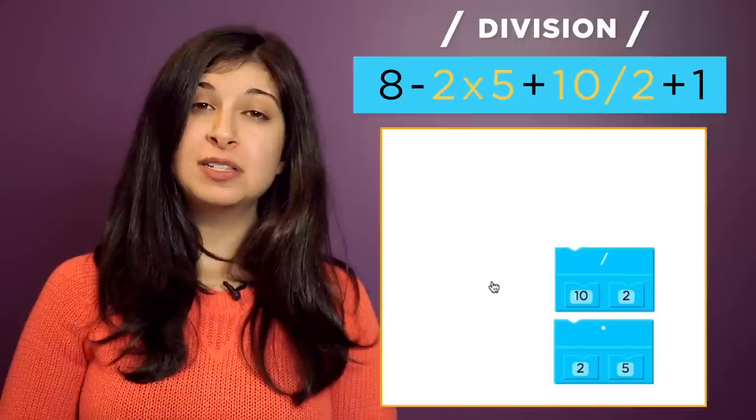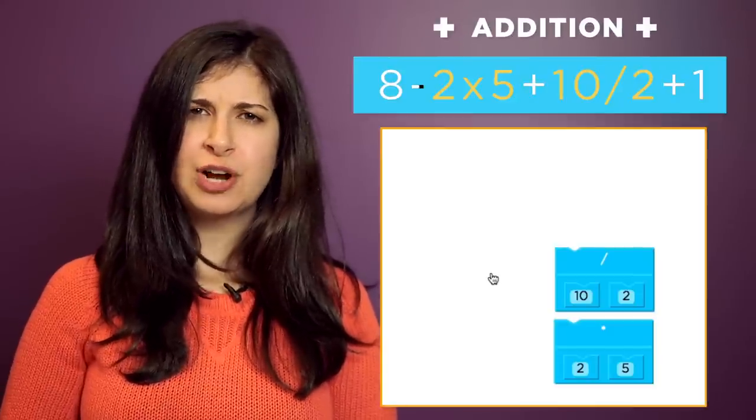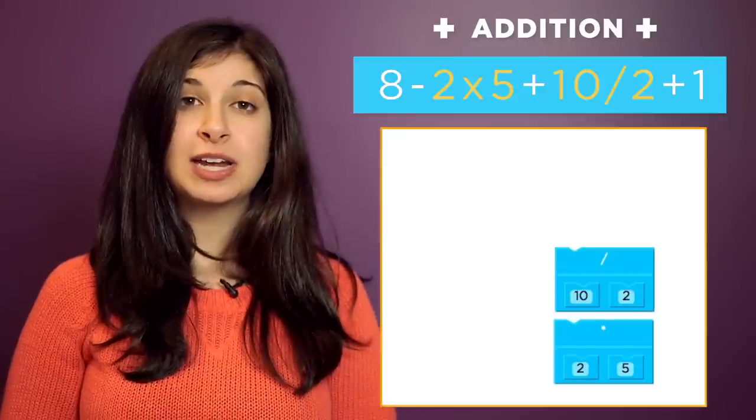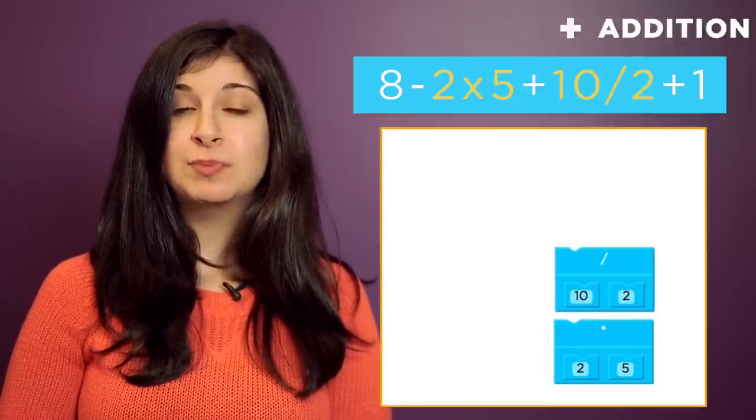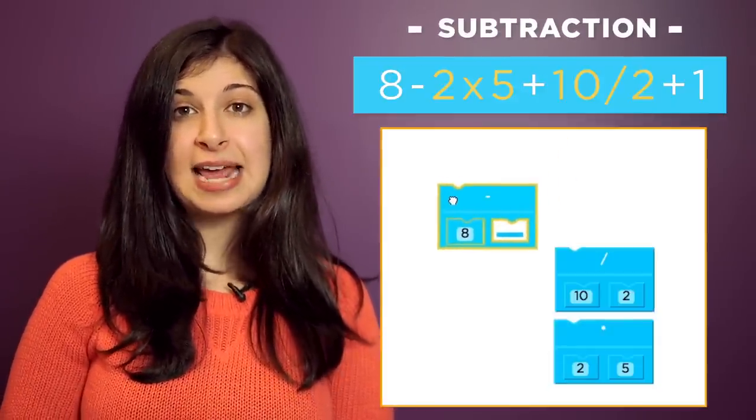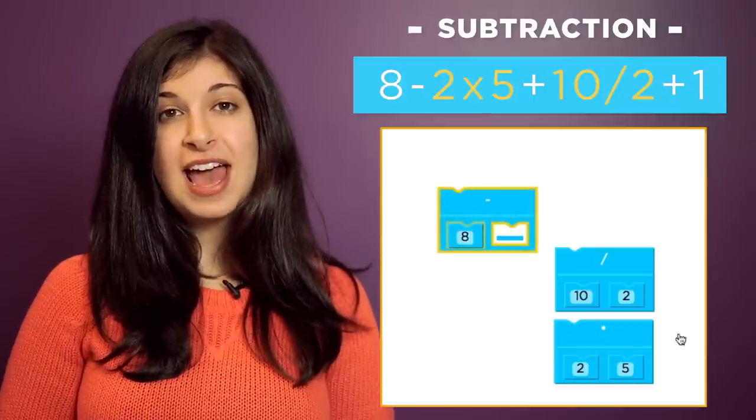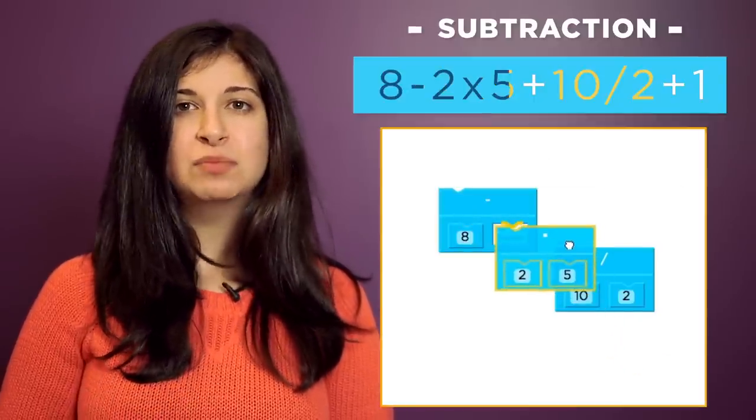AS. We've also got addition and subtraction here, so let's sort it out from left to right. First, we can grab a subtraction block and plug in 8 on the left and our 2 times 5 block on the right.